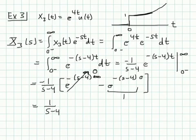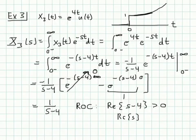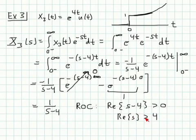This is valid when the real part of the exponent (s-4) is positive — meaning it's a decaying exponential that goes to 0 at infinity. So the region of convergence is that the real part of (s-4) is greater than 0, which means the real part of s is greater than 4. So e^{4t}u(t) has Laplace transform 1/(s-4), valid for Re(s) greater than 4.